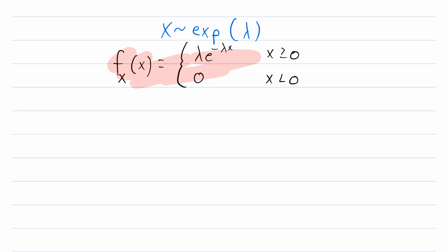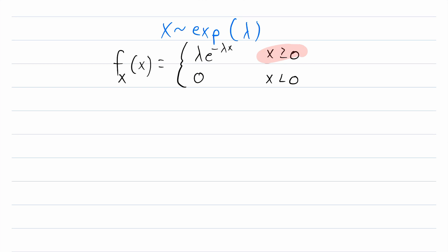You should recognize this — this is the probability density function, or PDF, of the exponential distribution. It's equal to 0 for negative values of x, and it's equal to lambda times e to the negative lambda x for non-negative values of x. Remember that lambda is a constant, called the parameter or rate parameter.